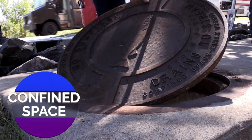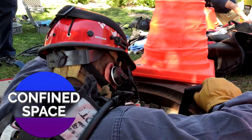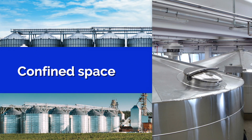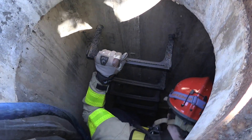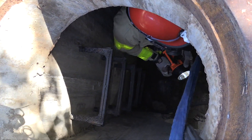Confined space rescue is exactly that — it involves rescuing people from a confined space. That could be as simple as an irrigation tube where children playing inside get too far in and can't get out. It could be an industrial setting with tanks, or an agricultural setting with silos. A confined space encompasses anything where the space is not considered tenable — it's not a habitable space — and somebody needs to be extracted from it.